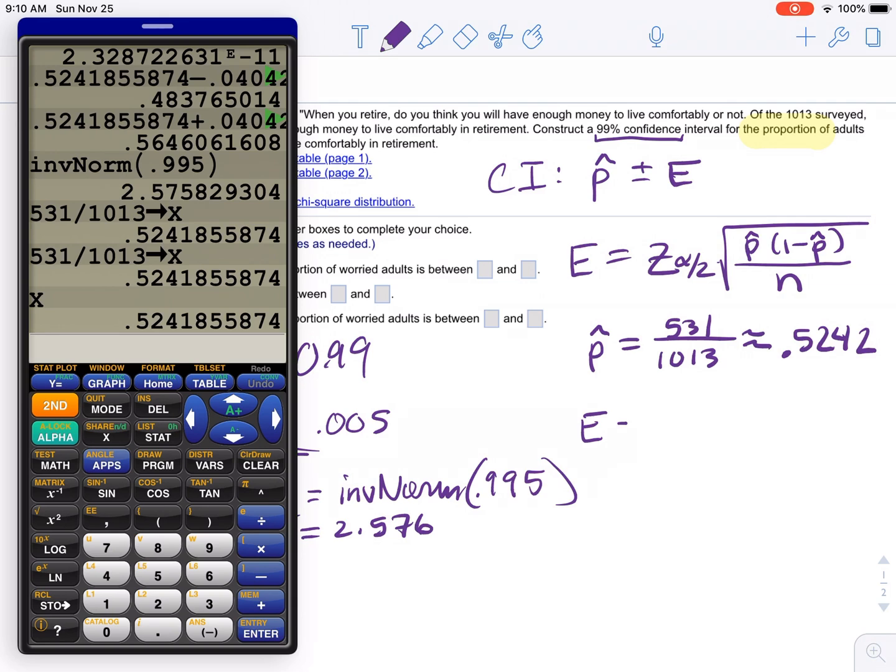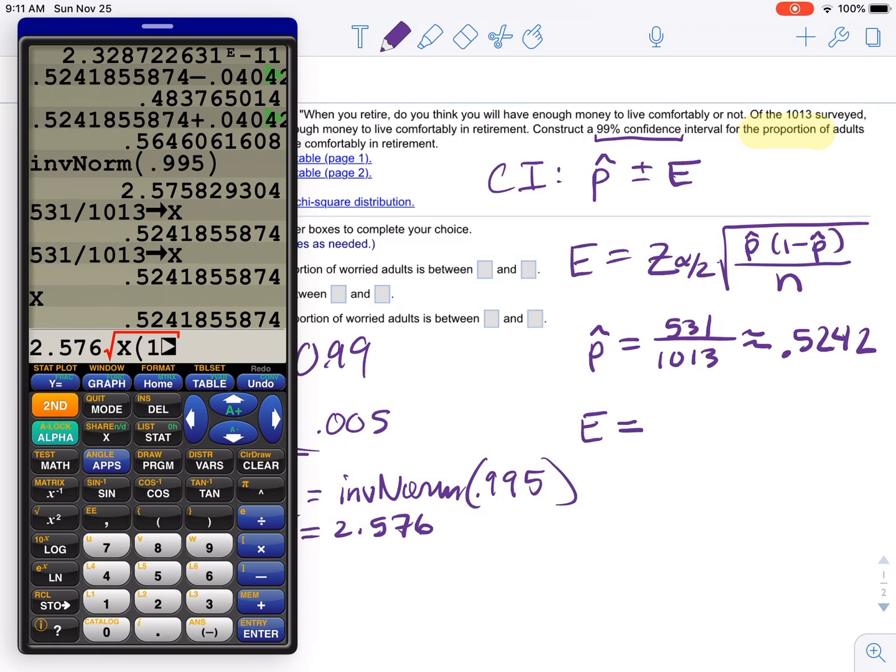So E is equal to... Now watch. I'm going to do 2.576 square root X times 1 minus X divided by 1013 because we have N equals 1013.